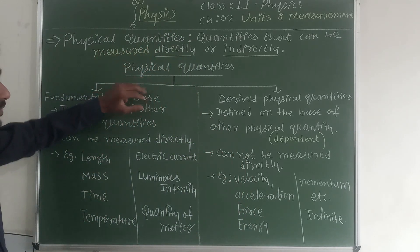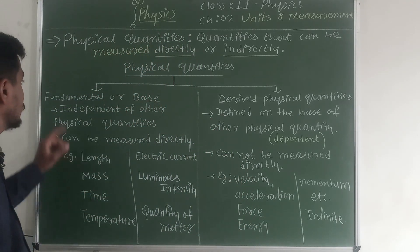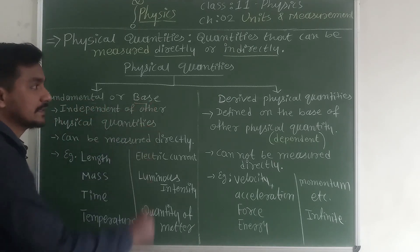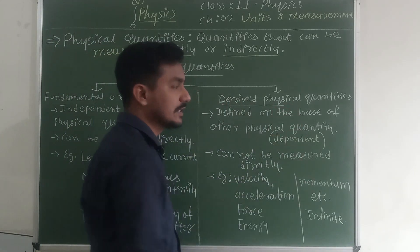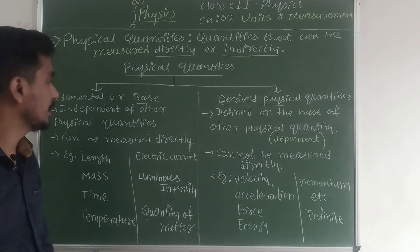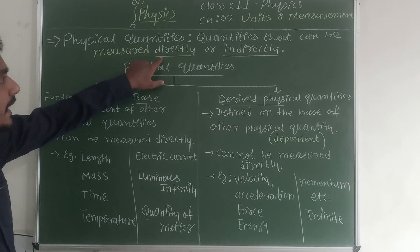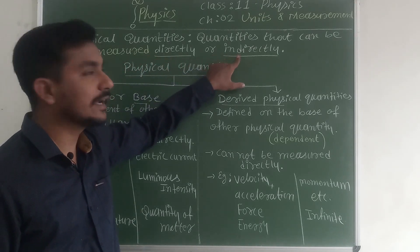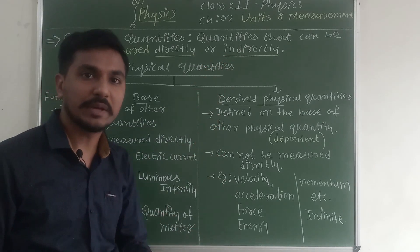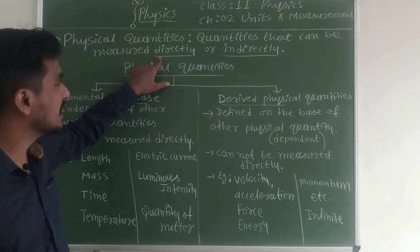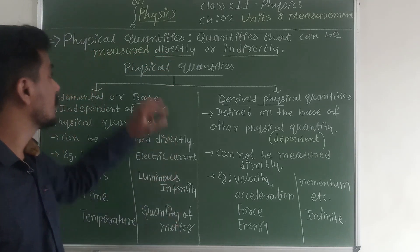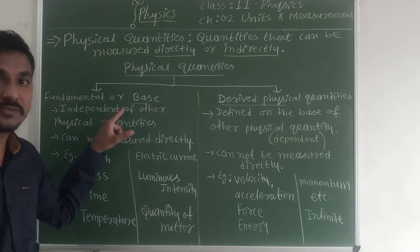Physical quantities are classified into two groups. One which we call fundamental or base, and another we call derived physical quantity. Physical quantities which can be measured directly are called fundamental or base physical quantities.